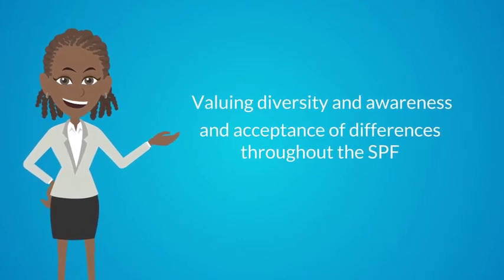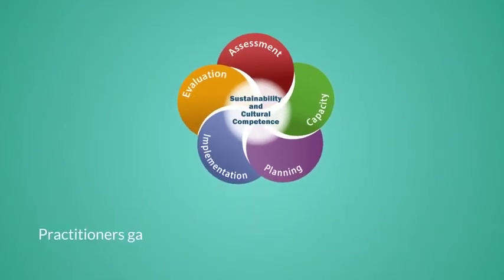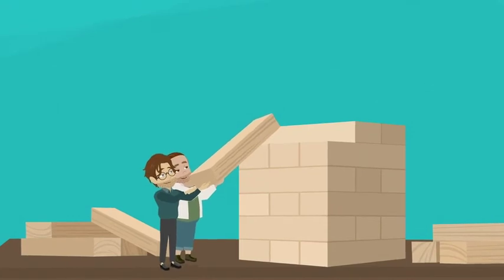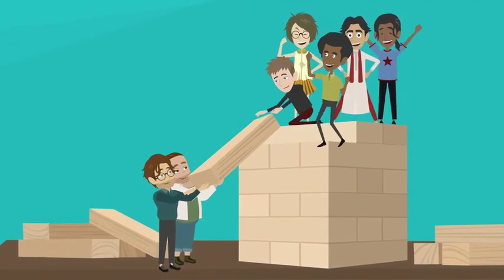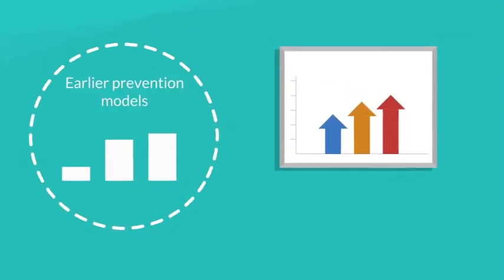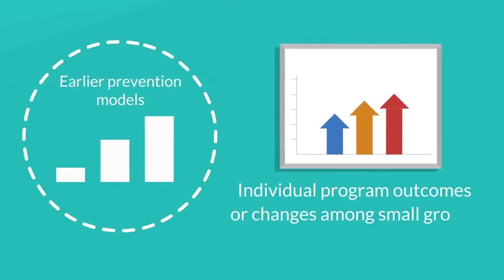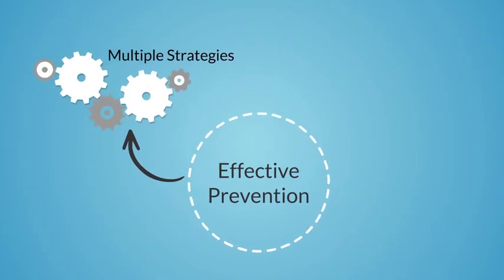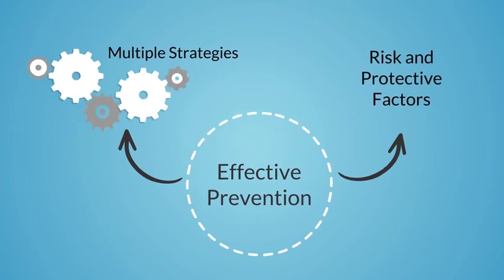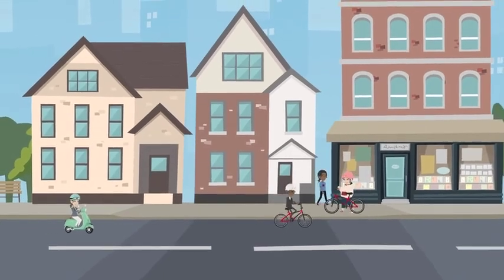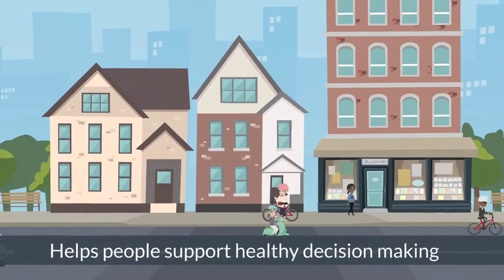In conclusion, the SPF is designed to help practitioners gather and use data to guide all prevention decisions. Communities may also engage in activities related to multiple steps simultaneously as their needs evolve. Earlier prevention models often measured success by looking at an individual's program outcomes or changes among small groups. But effective prevention means implementing multiple strategies that address risk and protective factors associated with the problems or issues in a given community. In this way, we are much more likely to create an environment that helps people support healthy decision-making. And that's the SPF.